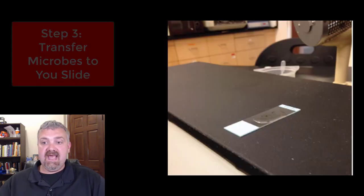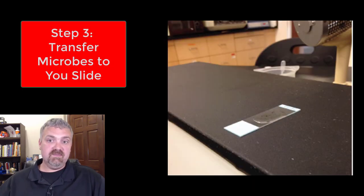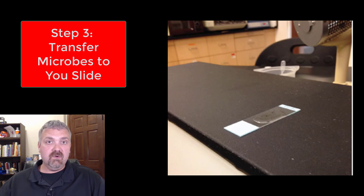We're going to flame the wire loop, let it cool, and then add two loopfuls of organisms onto our slide. If you're starting from a liquid culture like a nutrient broth tube, then you just transfer two loops of organisms to the center of the slide and then spread it out. That's pretty simple, just using your regular aseptic technique.